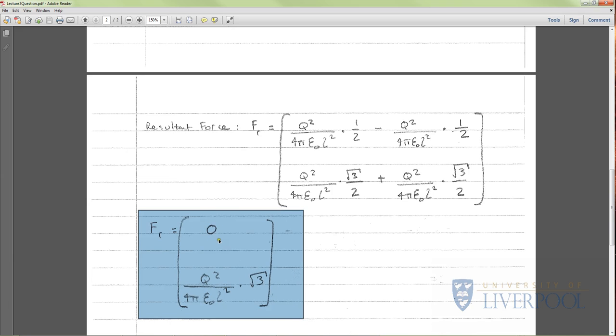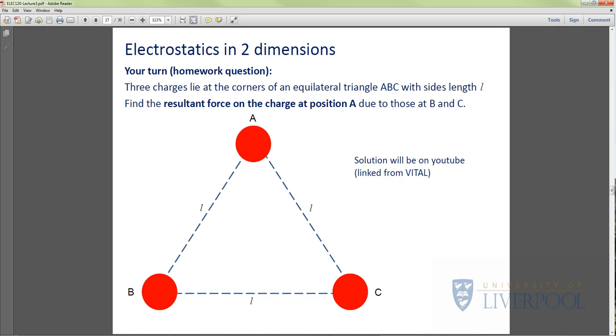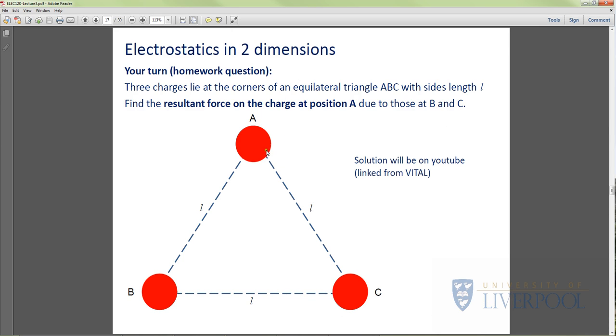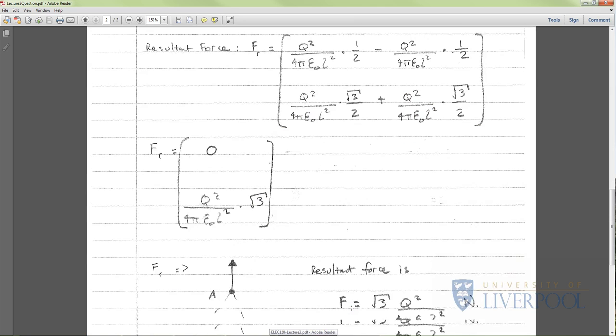The resultant force is actually 0 in the x direction, which makes sense if you look at our triangle. B and C are equal magnitudes and they're both going to be canceling each other out effectively. The force from B in the x direction is going to be cancelled out by the force due to C. The force in the y direction is positive y because it's going upwards. That makes sense - A is going to be pushed away by B and C.